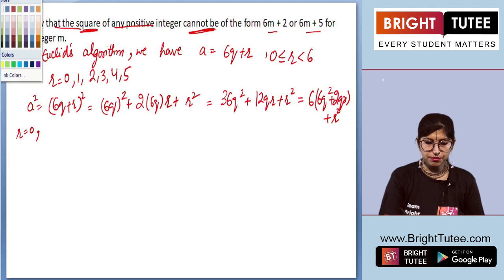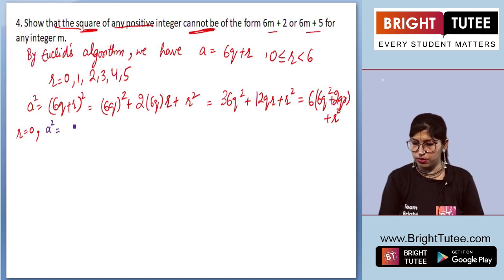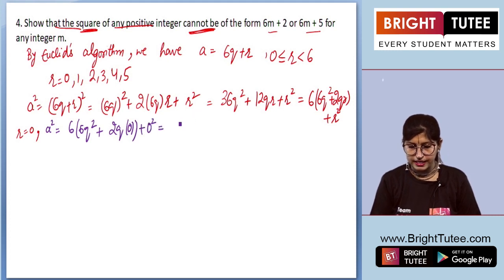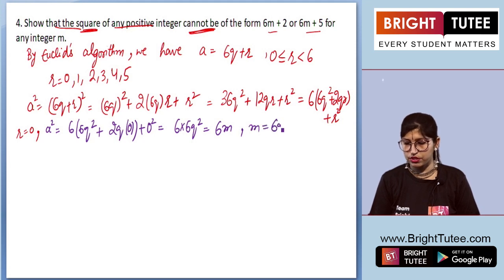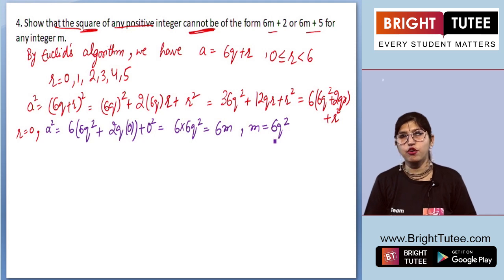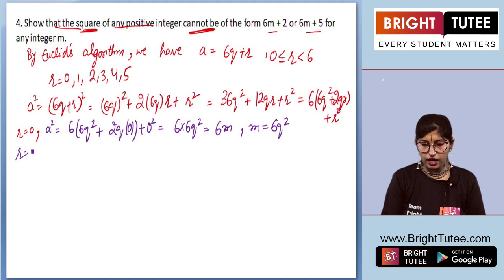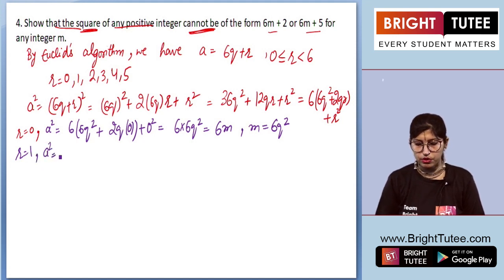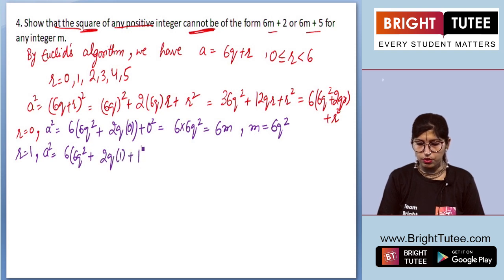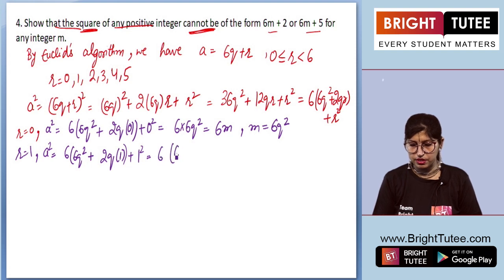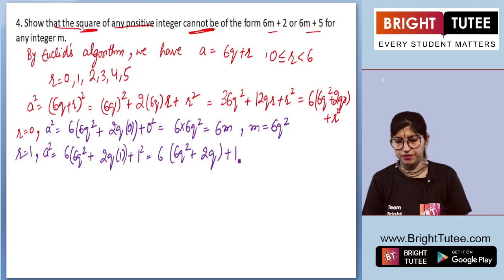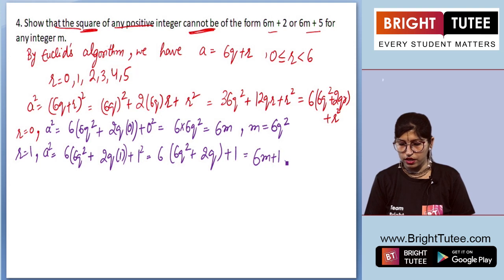When r equals 0, a squared equals 6 times (6q squared plus 0 plus 0), which gives 6 times 6q squared, of the form 6m where m equals 6q squared. When r equals 1, we get a squared equals 6 times (6q squared plus 2q) plus 1, which is of the form 6m plus 1 where m equals 6q squared plus 2q.